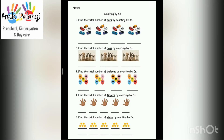Counting by fives. Number 1. Find the total number of cars by counting by fives.